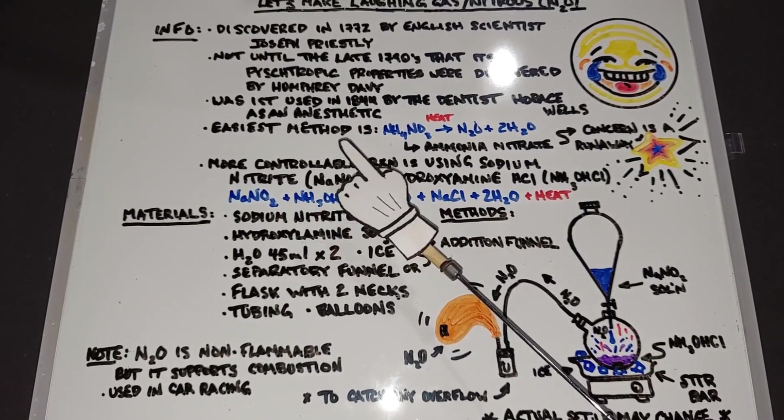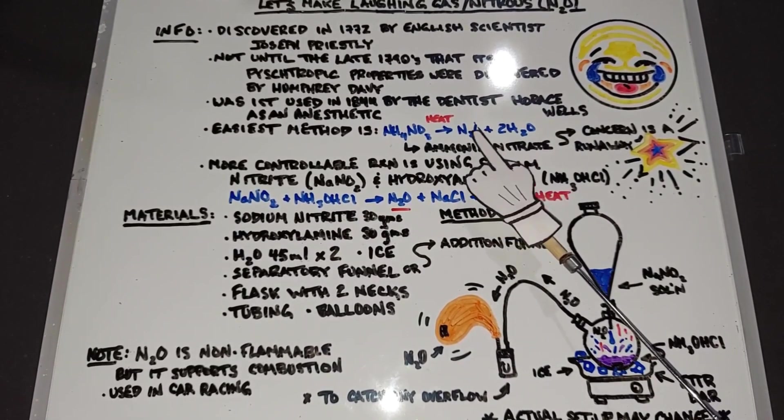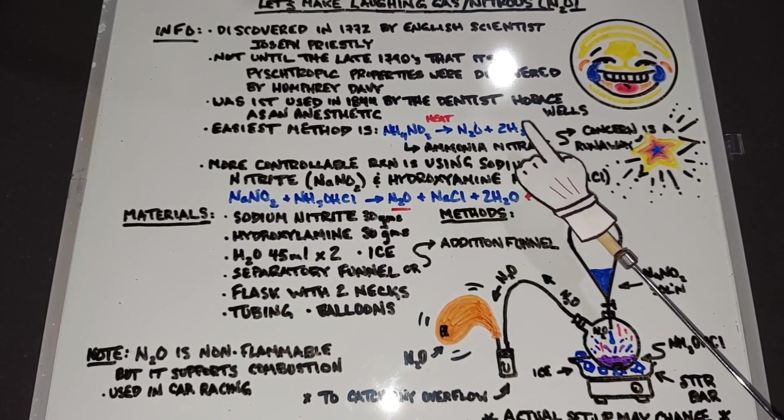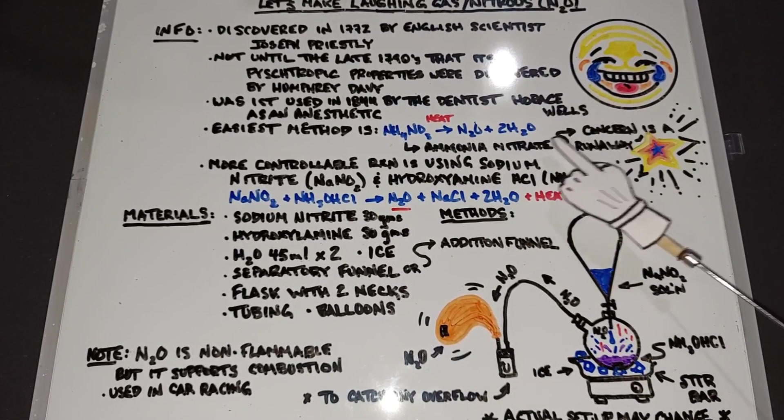The easiest method to produce this is to take ammonium nitrate and heat it, which will produce nitrous or laughing gas and water. Really simple reaction, however there's a big fear in doing this that you could get a runaway explosion because it's happened many times.